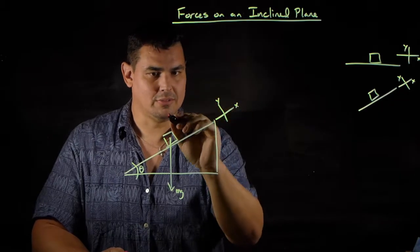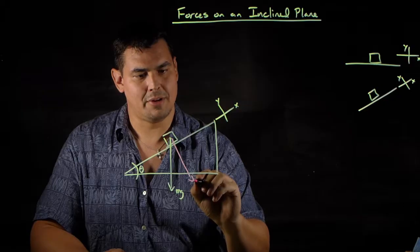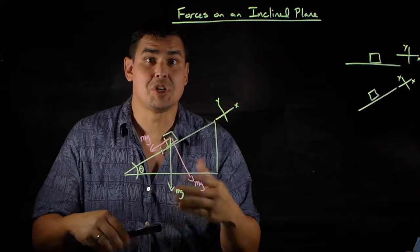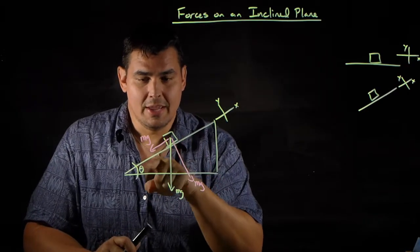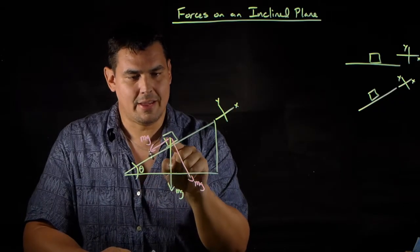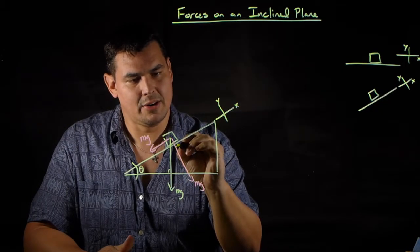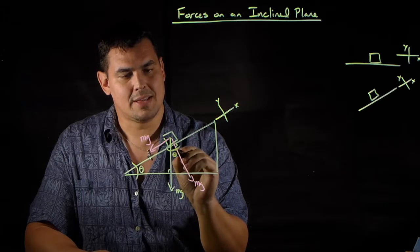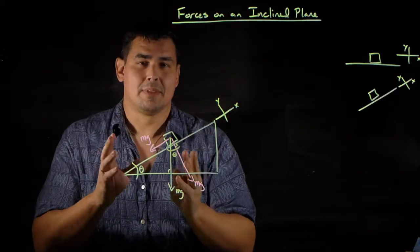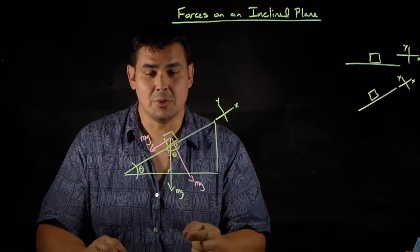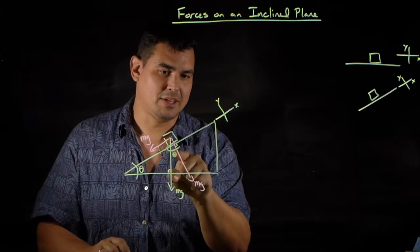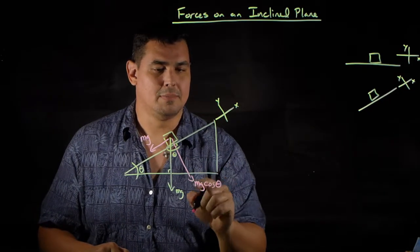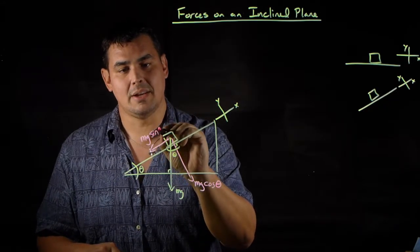With my tilted coordinate system, I'll have one component of gravity pointing along the ramp and one pointing into the ramp. To figure out which is which, this is a geometry problem. If I drop a perpendicular line, it creates a similar triangle, and this angle is the same as the incline angle. If you define the angle from the x-axis, the adjacent side is cosine and the opposite side is sine. So the component perpendicular to the ramp is mg cosine theta, and the component parallel to the ramp is mg sine theta.